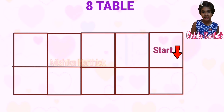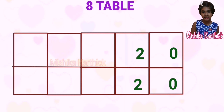We start in the upper right corner and write the numbers coming down. We write the even numbers 0 to 8, but we write each number twice: 0, 0, 2, 2, 4, 4, 6, 6, 8, 8.